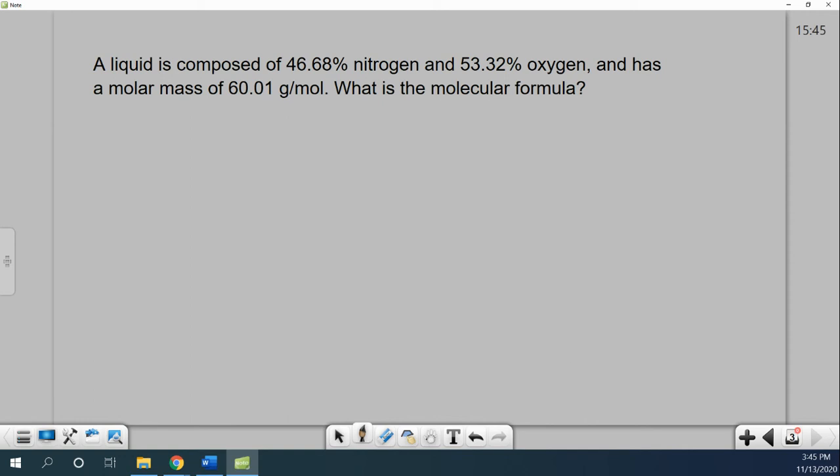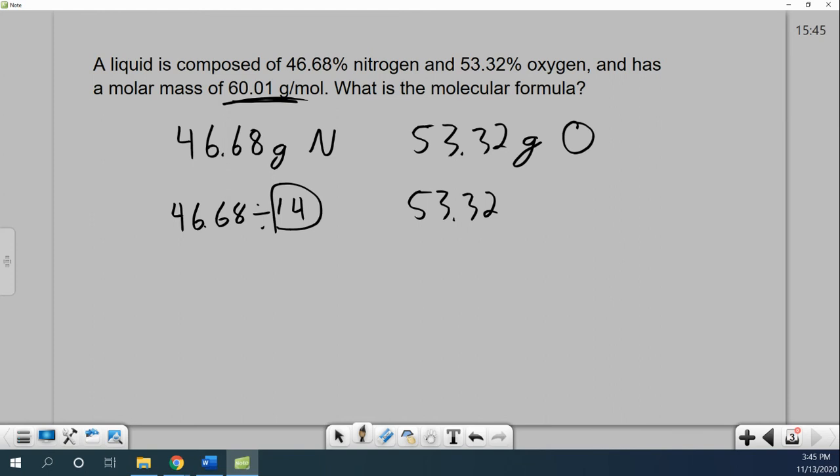We'll do one more quick one here just to figure it out. Nitrogen is 46.68 grams. Oxygen 53.32 grams. And I know the total molar mass is basically 60. So how many moles do I have? Molar mass of nitrogen is 14. Molar mass of oxygen is 16. So let's divide those two. So that's 3.33. 53.32 divided by 16, 3.33.